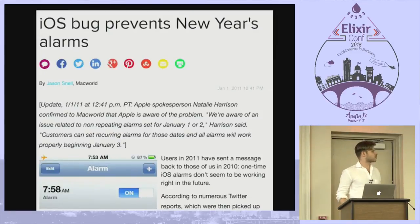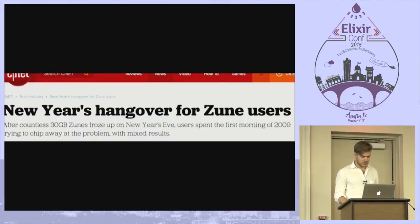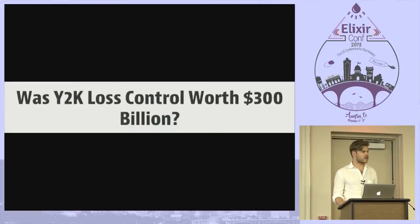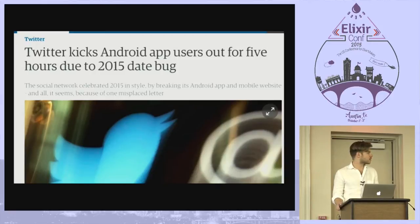There are a lot of people that have problems with date and time. You have Apple that had a bug, Microsoft that had a bug, Twitter, and of course Y2K — the big one — where apparently they spent $300 billion trying to control that. In the case of Twitter, someone decided to make their own timestamp formatting and got something wrong. I made some time zone and date/time libraries for Elixir, and one of the points is: sometimes it's good to use a library for these things instead of trying to make your own.